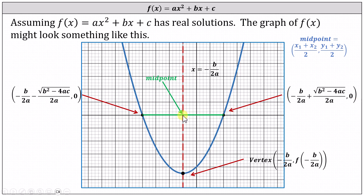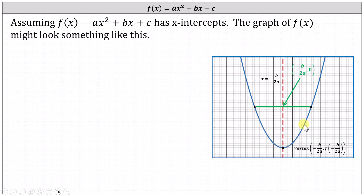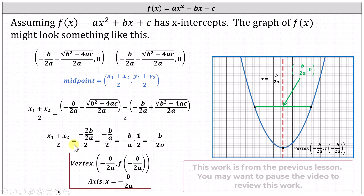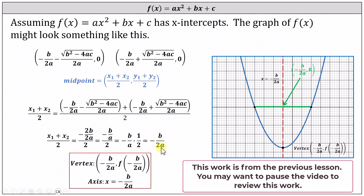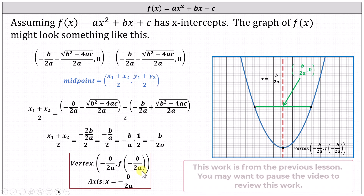Notice the x-coordinate of the midpoint of this green segment, where the endpoints are the x-intercepts, gives us the x-coordinate of the vertex as well as the equation for the axis of symmetry. In the previous lesson, we found the x-coordinate of the midpoint by summing the two x-coordinates of the x-intercepts, which equals −b/2a, indicating this must be the x-coordinate of the vertex.